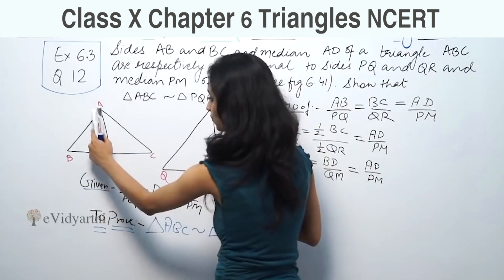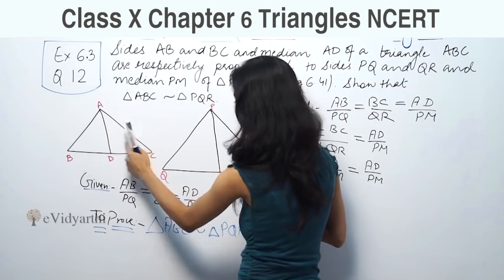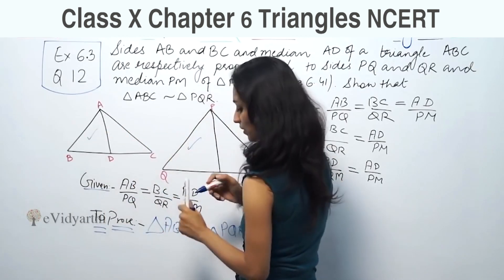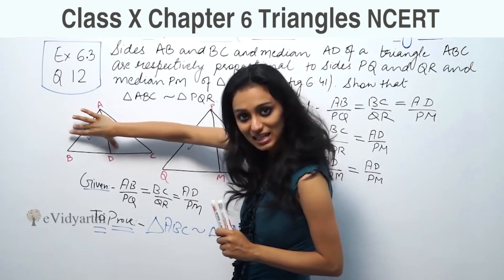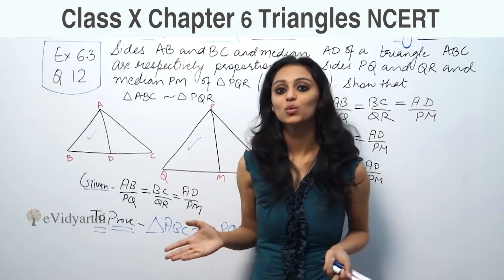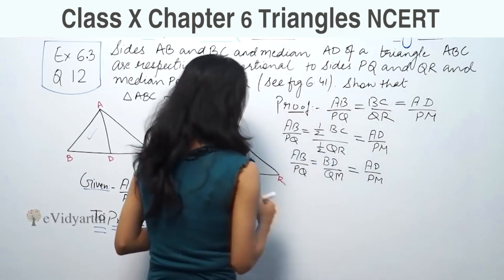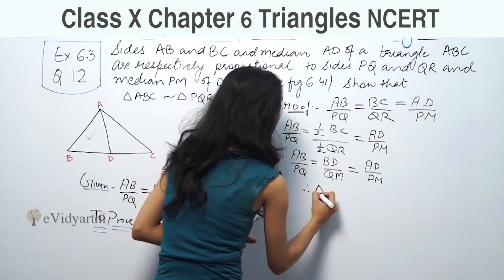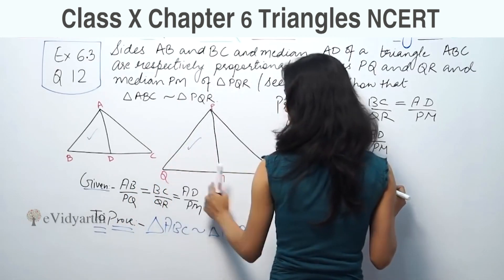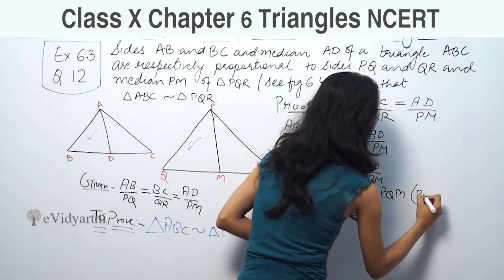Now, AB by PQ, BD upon QM, and AD upon PM are equal. This means that triangles ABD and PQM are similar by SSS similarity.